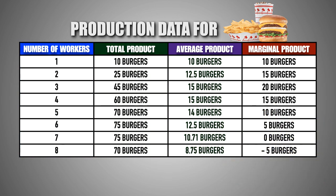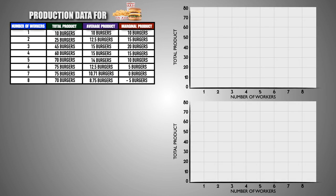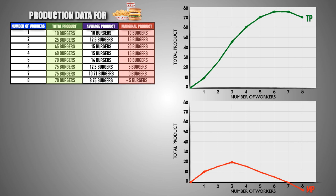In order to visualize the trends in total physical product, marginal product, and average product with each worker hired, we're going to take the data we've calculated and graph it on a set of axes. Here we can see the total number of burgers produced by In-N-Out with each worker hired, the number of burgers that each additional worker produced, and the number of burgers produced per worker hired. Total product, marginal product, and average product initially increase and then decrease as In-N-Out hires more workers.